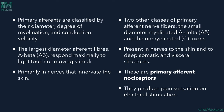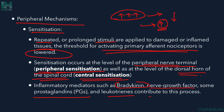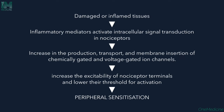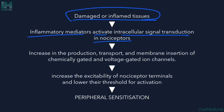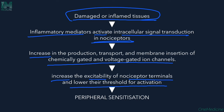Inflammatory mediators activate intracellular signal transduction in the nociceptors, increasing production, transport, and membrane insertion of chemically-gated and voltage-gated ion channels. This increases excitability of the nociceptor terminals and lowers their threshold for activation — peripheral sensitization. When you have a wound, even someone coming near to touch it causes anticipated severe pain — this is sensitization at work, an evolutionary defense mechanism to protect already damaged tissue from further harm.